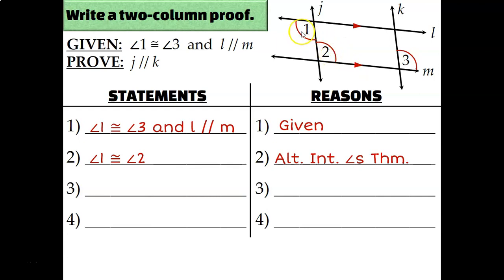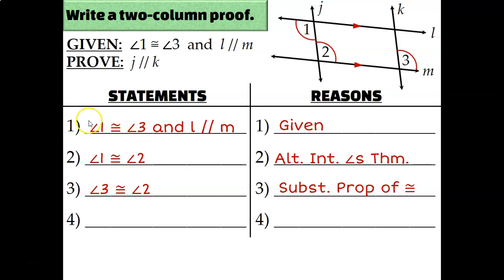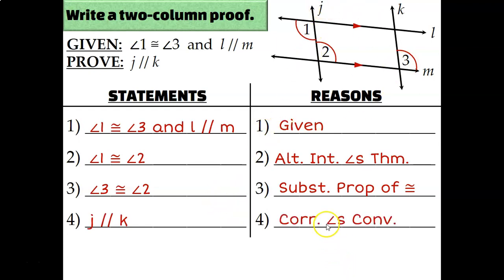Labeling the diagram, we see that angles 1, 2, and 3 are all congruent. So angle 2 and angle 3 are congruent to each other by the substitution property — since 1 is congruent to 3, I can put 3 anywhere I see a 1. You could also use the transitive property: since 3 is congruent to 1 and 1 is congruent to 2, you can say 3 is congruent to 2. Either way, angles 2 and 3 are corresponding angles, so the lines are parallel because of the corresponding angles converse.